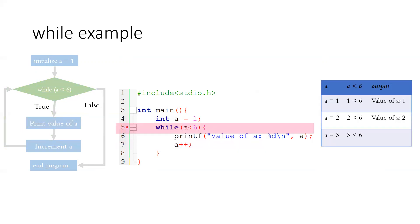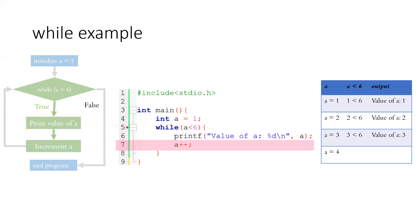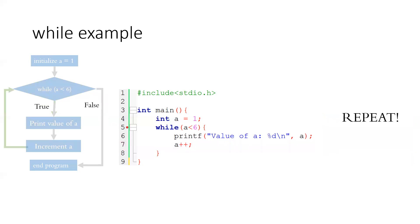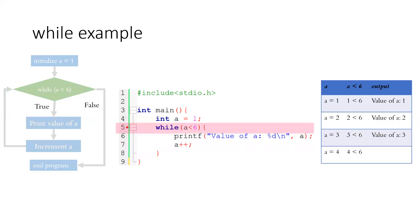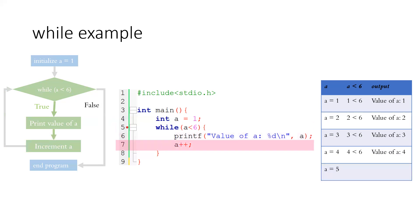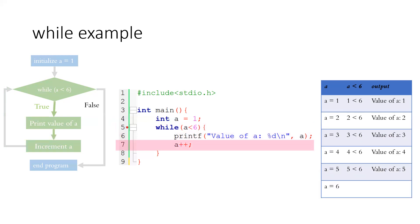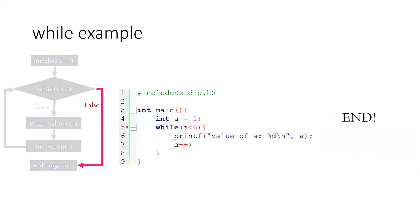We go back to the condition again: is 3 less than 6? Yes, it is still true. So it prints the value of 'a' as 3, then increments 'a' to 4. Re-evaluating: is 4 less than 6? Still true. It prints 'a' as 4, then increments to 5. Is 5 less than 6? Still true. It executes the statement and prints 5. On the next increment, 'a' becomes 6. Now when we go back to the condition, is 6 less than 6? It returns false, because 6 is equal to 6. So the while loop ends and the program terminates.